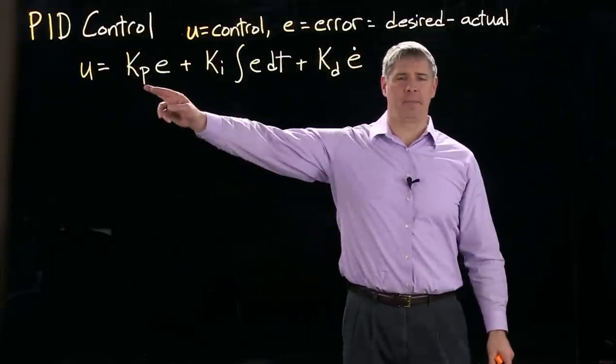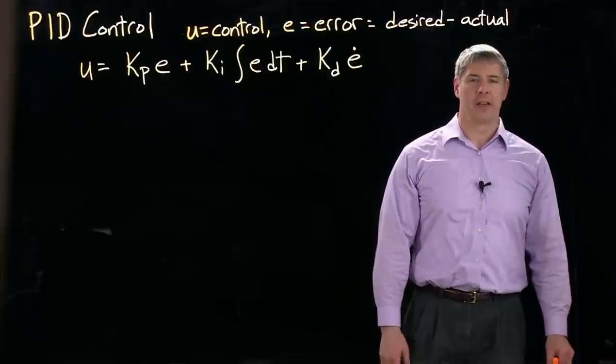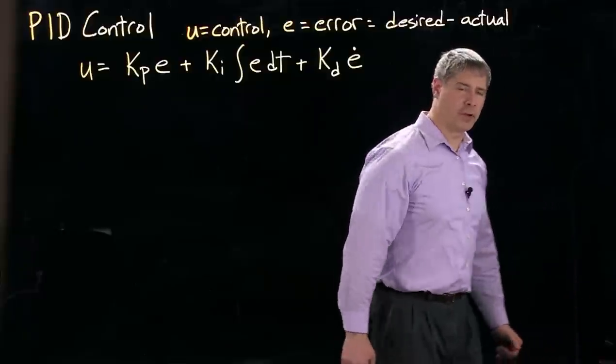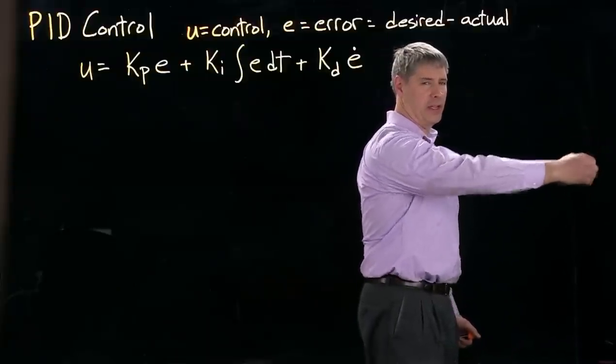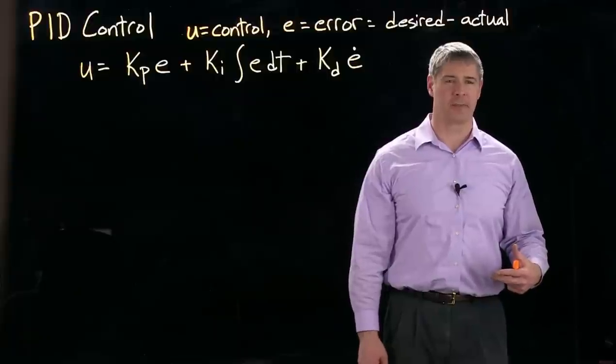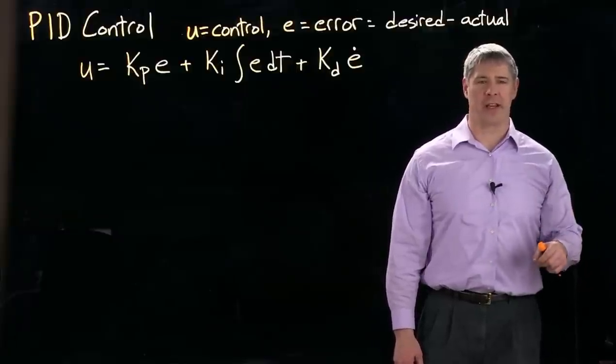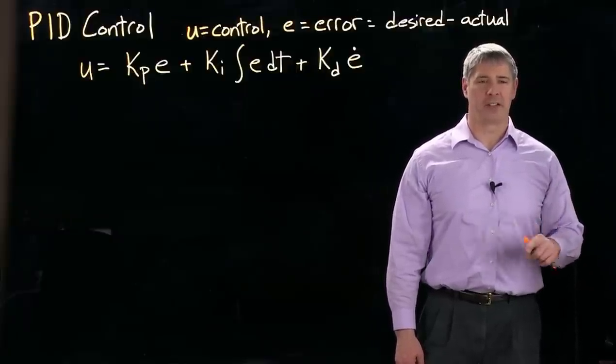So the Kp times E term, that's actually acting like a spring. So if there's an error of 45 degrees from where I actually am to where I want to be, we multiply that by the proportional constant Kp and that gives us a torque. So it's acting just like a spring. It acts on position error to try to reduce it.